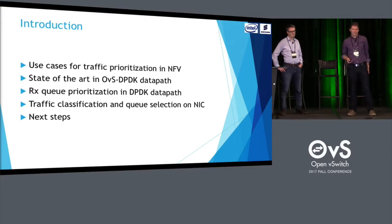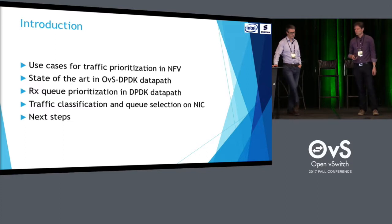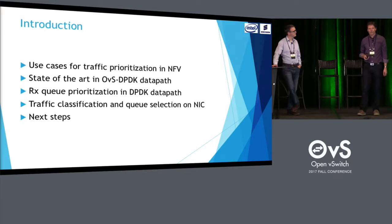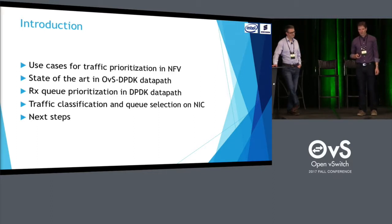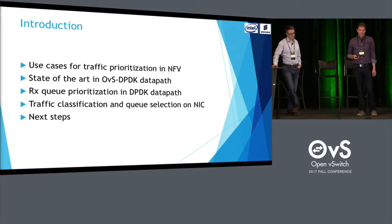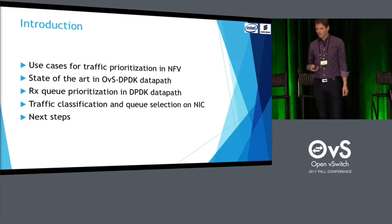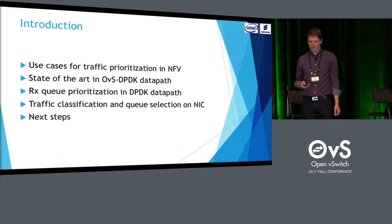This talk is about ingress scheduling. Before we go into the details of how we suggest to do ingress scheduling in OVS — and when I say OVS, I mean explicitly OVS-DPDK — let me briefly introduce the use cases for that. I will also look at the current status quo in OVS-DPDK and why it is not sufficient, then hand over to Billy to talk about his RFC work to address those concerns.